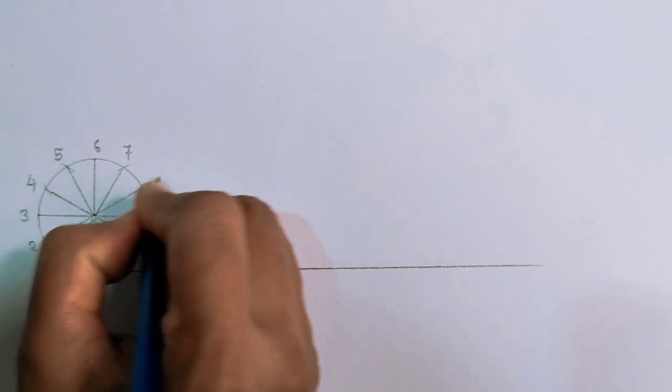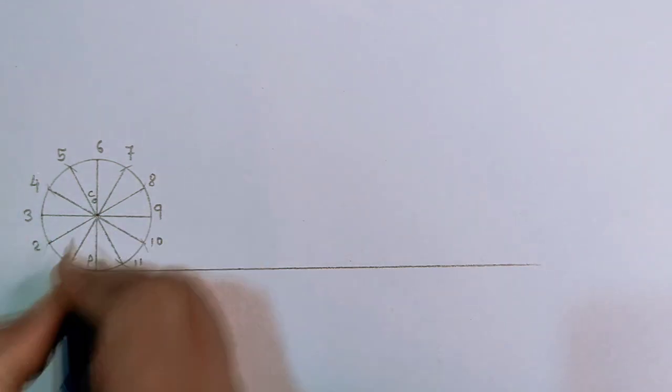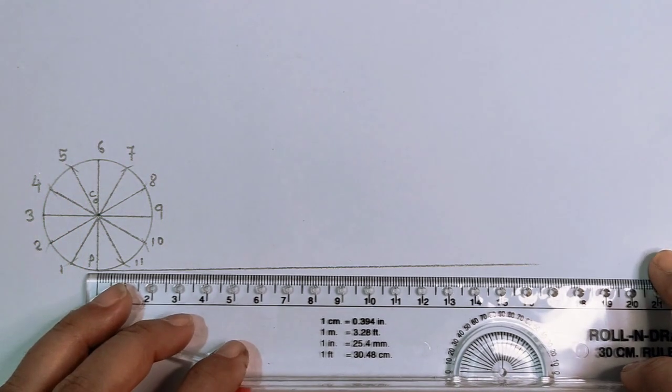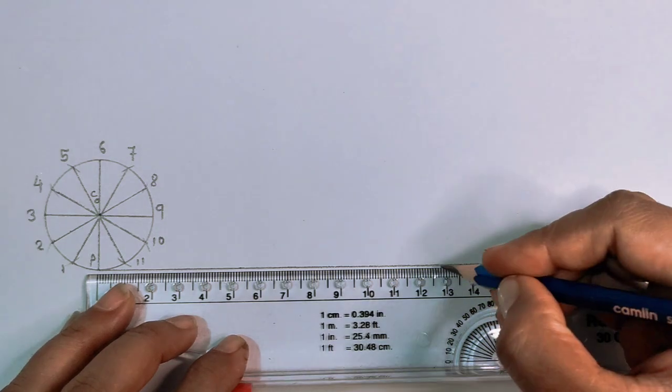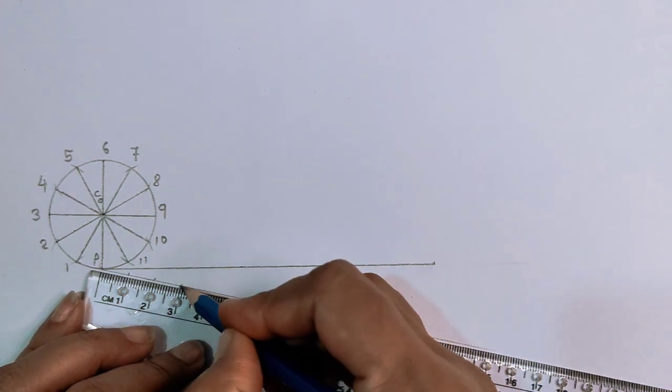Next, draw a line at the bottom of the circle on which the circle rolls. The line length is equal to the circumference of the circle: pi times d equals 125.6mm, so we'll take 126mm.